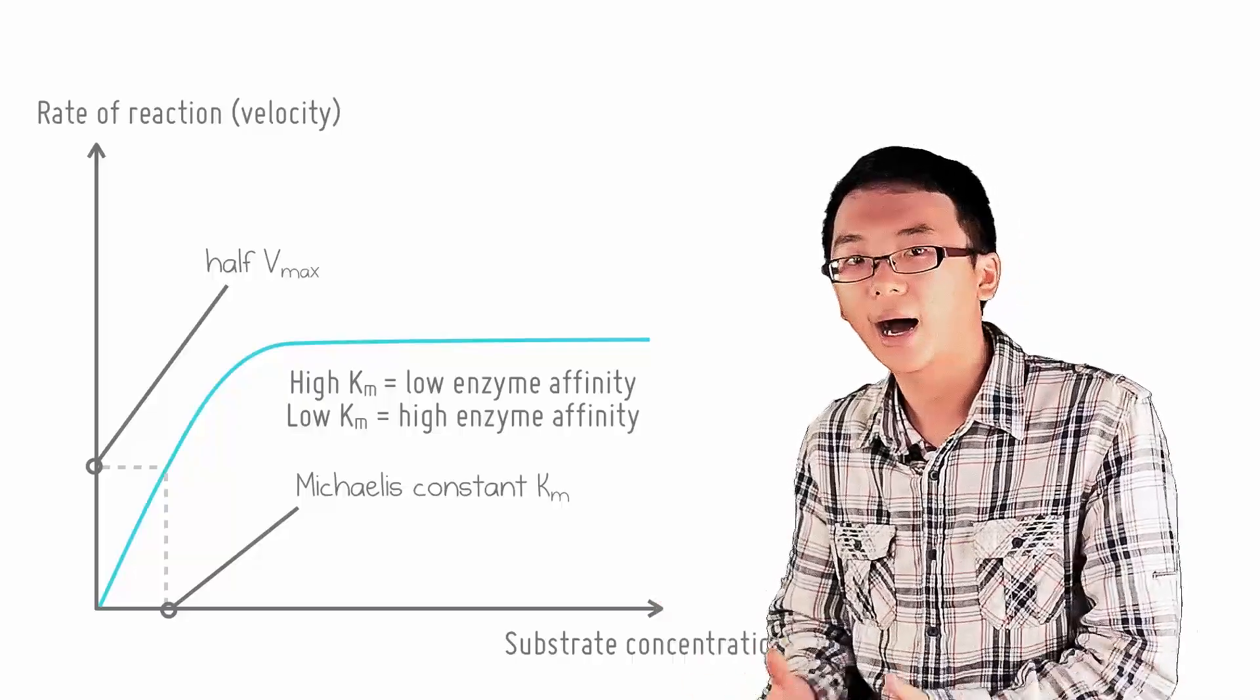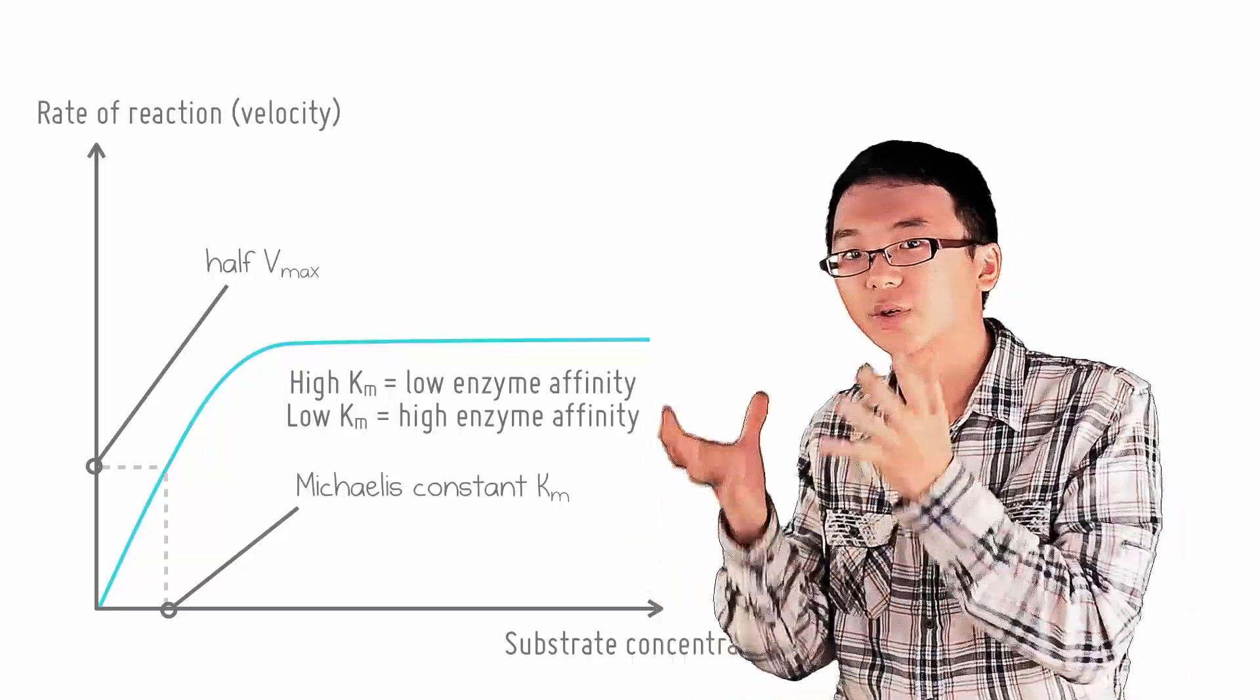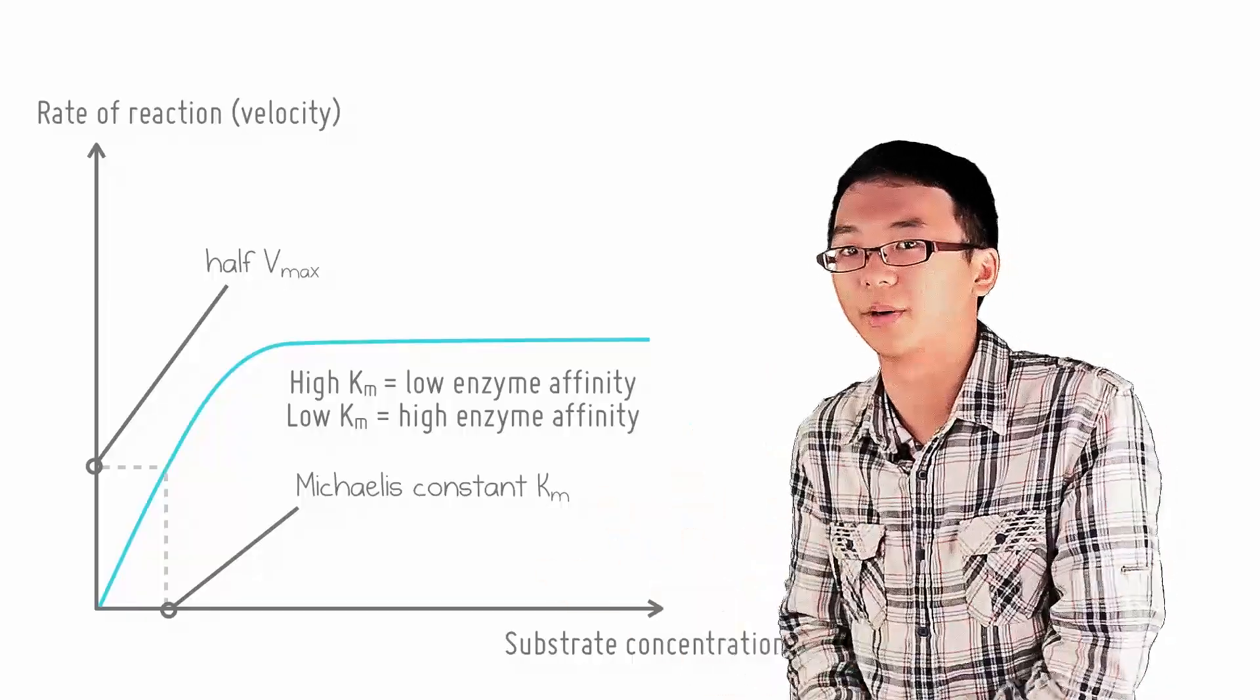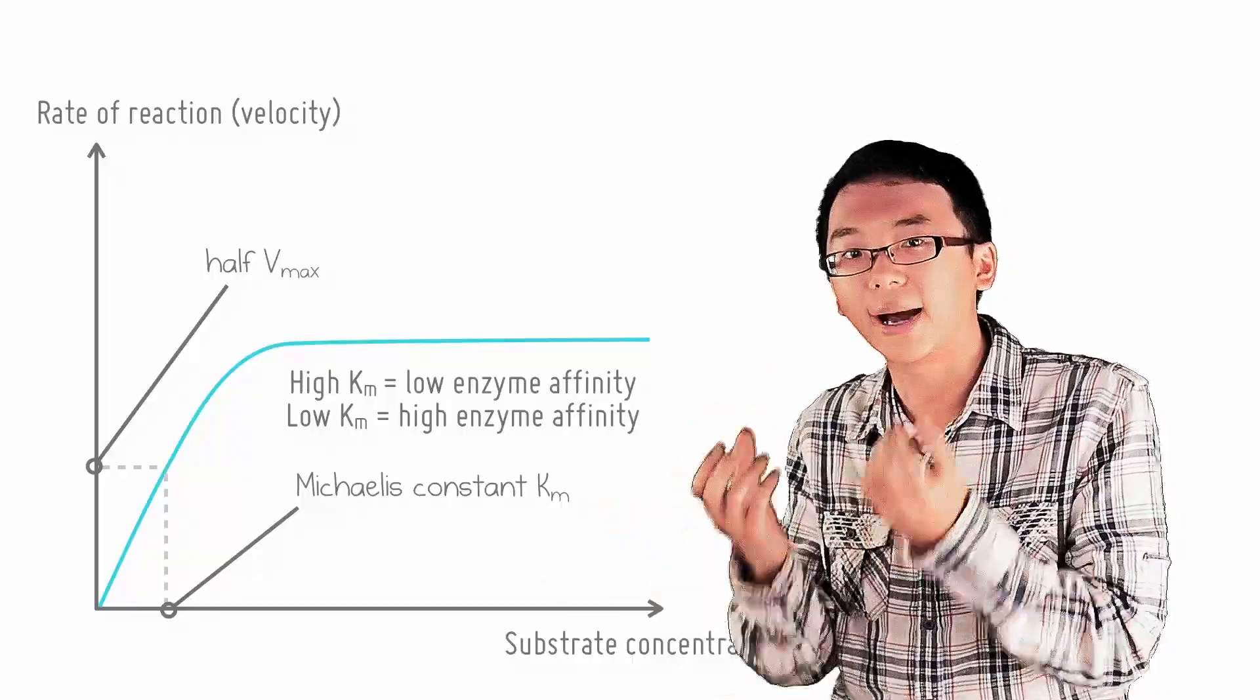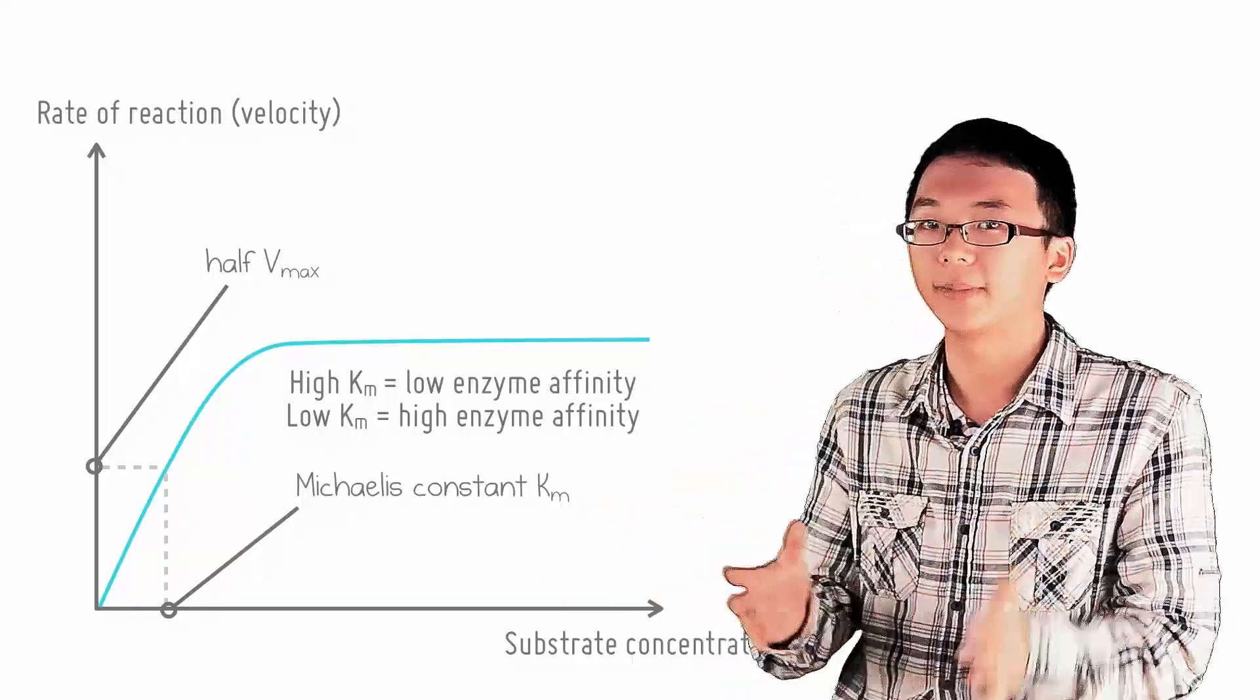On the other hand, a high Km means a large substrate concentration is needed to reach half the maximum rate, implying low binding affinity between the enzyme and the substrate.